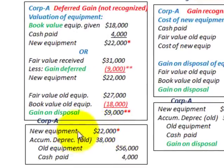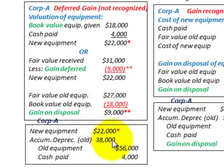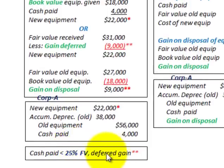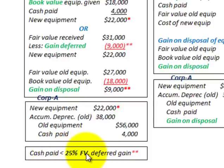For our journal entries for Corporation A: the new equipment — what they'd be adding on the books — is $22,000, which is the valuation of the equipment we calculated. We remove the accumulated depreciation of the old equipment exchanged, and we also remove the old equipment cost from the books. Since they gave Corporation B cash, we reduce the cash account for Corporation A. This is recorded as a deferred gain. Note that the cash paid is less than 25% of the fair value of this exchange; therefore, the gain is deferred. If the cash paid were greater than 25% of the fair value of the exchange, then we would recognize a gain.